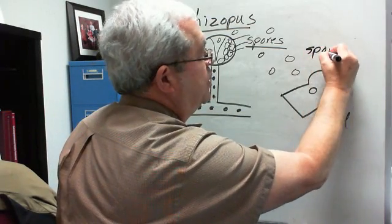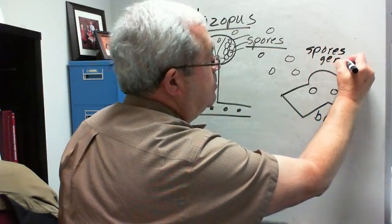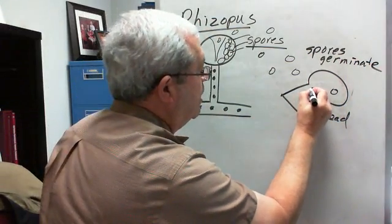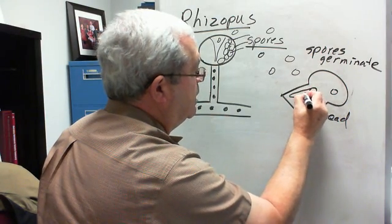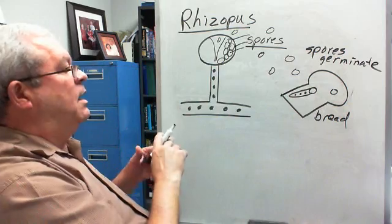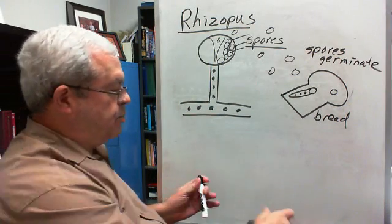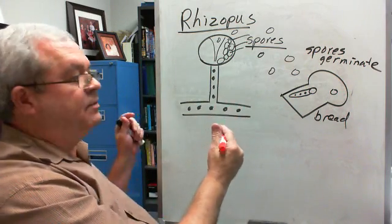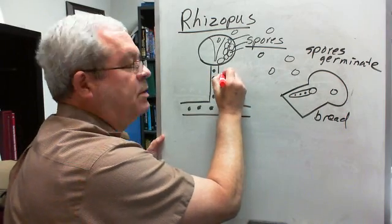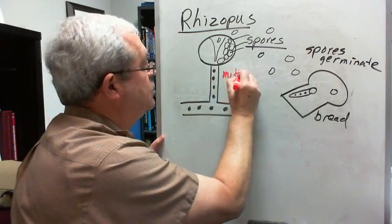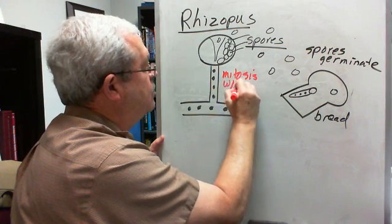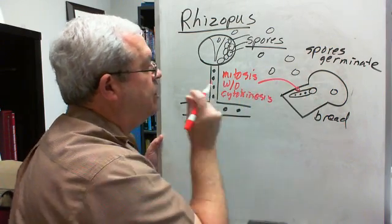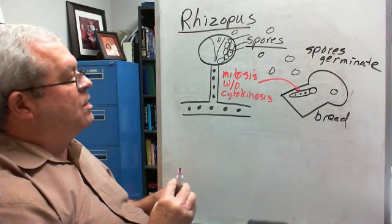The spores germinate is the general term. And what does that mean? That means they produce more hyphae, kind of like the parent hyphae here. They produce more hyphae and those hyphae have nuclei. And so by what process do these spores produce these new hyphae? The same process that produces the parent hyphae. It's, what is that again? Mitosis. What? Without cytokinesis. Yes, mitosis without cytokinesis. So that's what's going on here, mitosis without cytokinesis.